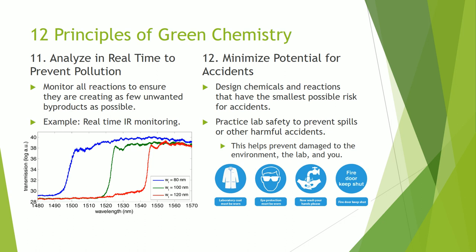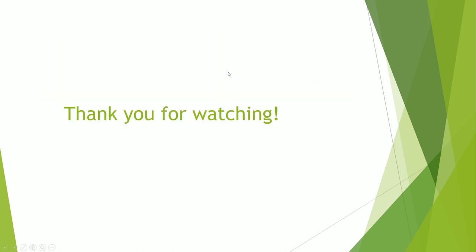Number twelve: minimize potential for accidents. This includes both designing chemicals and reactions that have the smallest possible risk for accidents and practicing general lab safety. This prevents damage to the environment, to the lab, and to you. Thank you for watching.